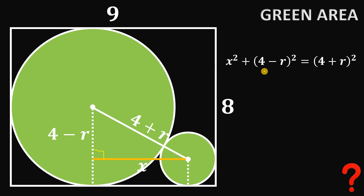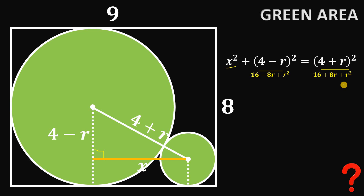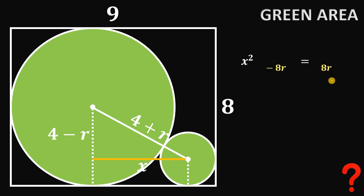Using the Pythagorean theorem: X² + (4 − R)² = (4 + R)². Expanding (4 − R)² gives 16 − 8R + R², and expanding (4 + R)² gives 16 + 8R + R². Subtracting 16 from both sides cancels those terms, and subtracting R² from both sides cancels those as well. What remains is X² − 8R = 8R.